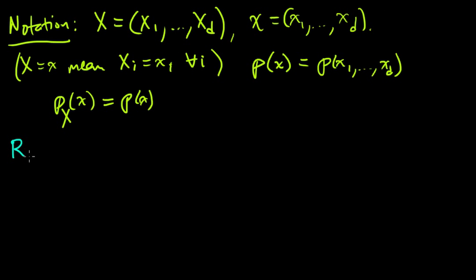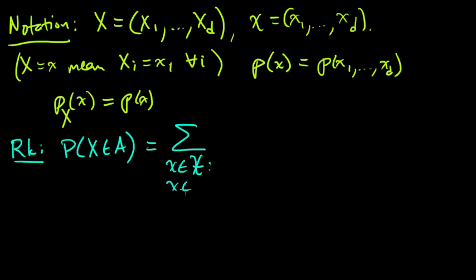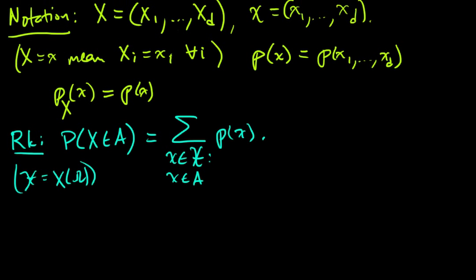So now let me make a simple remark. So the probability that a random vector X takes a value in A can be written using countable additivity of a measure, of this measure p. We can write this as the sum over all x in, and here this capital script X is the range, so this is as usual, or rather, the image of X. So it's the sum over that, of all the elements in A, of the PMF. So this is just exactly the same as before, except now we're working with a random vector.